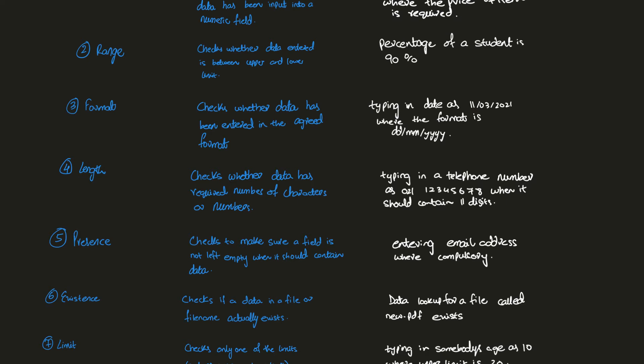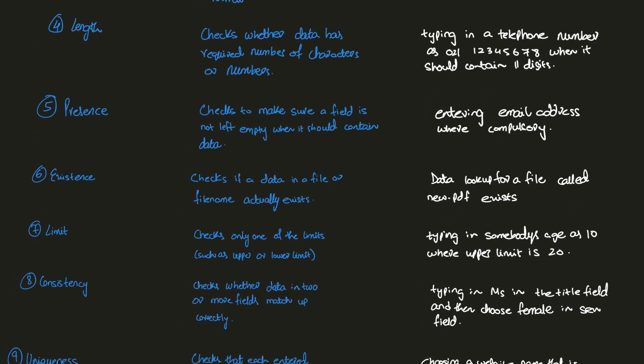Now we have presence check, something you've likely encountered every time you register on a website. You need to enter your email address and password — those are fields where presence is required. There is often an asterisk next to these fields indicating that they must be filled in before you can proceed. Presence check ensures a field is not left empty when it should contain data, such as when entering an email address is compulsory.